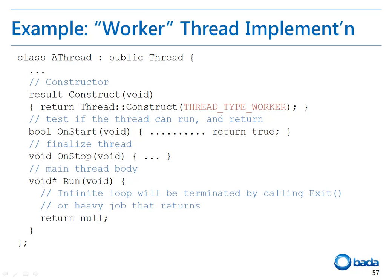The next function to be implemented is the onStop function. The onStop function is called when the thread is terminated and returns all the resources created in the thread. The last function to be implemented is the run function as IRunnable. The actual operation of the thread is implemented in this function. To exit the thread currently in progress, you have to call the exit function of the thread.